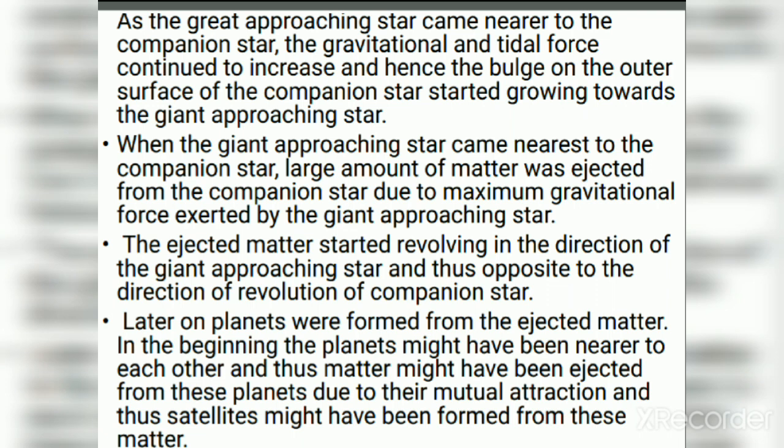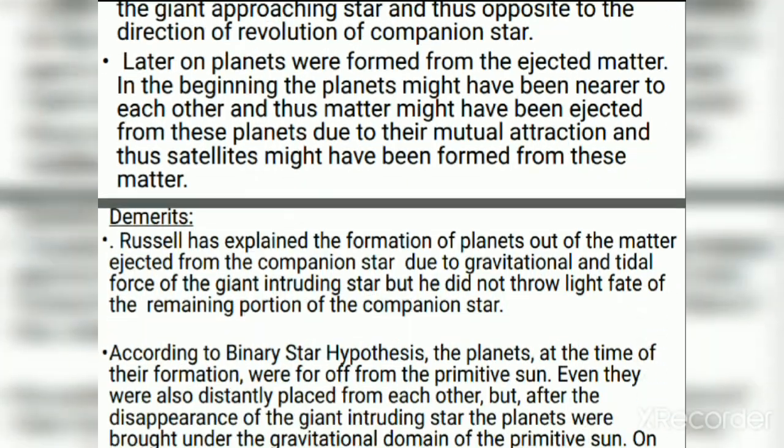In the beginning, the newly formed planets might have been nearer to each other, and thus matter might have been ejected from these planets due to their mutual attraction, and the satellites might have been formed from this matter.